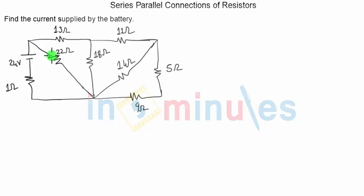the current supplied by the battery. To club all the resistors and replace them with a single resistor, we have to quickly look for series and parallel combinations.